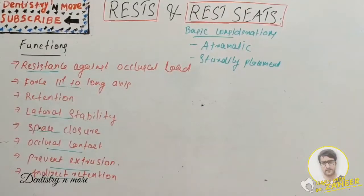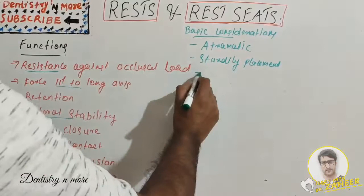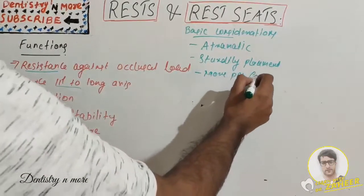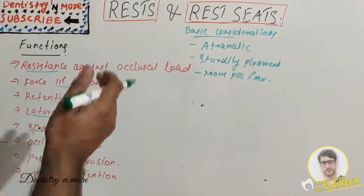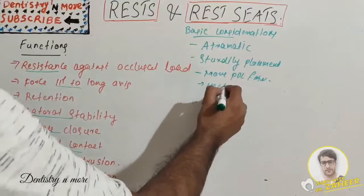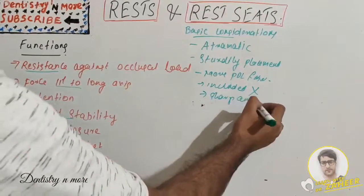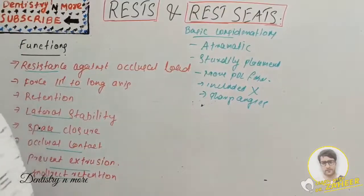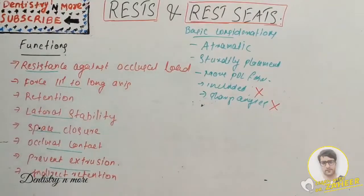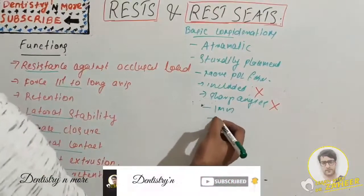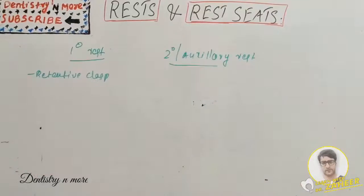The rest seat should be within the confines of the greatest tooth mass, where there are more periodontal ligament fibers. It should not be placed on an inclined tooth surface. There should be no sharp angles and no inclined planes. The minimum thickness is 1 mm, and there should not be any undercuts.